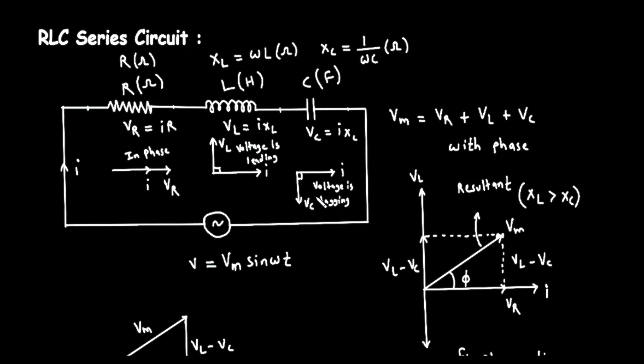Finally, the circle with a sine wave inside is our AC voltage source. This is what powers the circuit. The equation below it, V equals V sub M times sine of omega T, describes the voltage it supplies. V is the voltage at any specific moment in time. V sub M is the maximum or peak value the voltage can reach. Omega is the angular frequency, telling us how fast the voltage alternates. T is time.